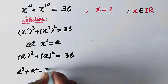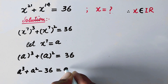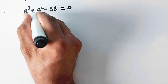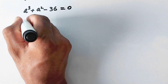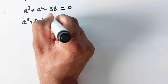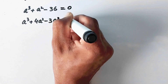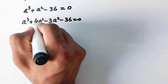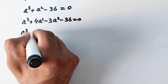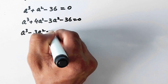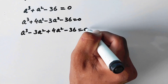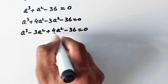This 36 will move to the left side, giving us a cubed plus a squared minus 36 equal to 0. Now we will factorize: we can write a cubed plus 4a squared minus 3a squared minus 36 equal to 0, since 4a squared minus 3a squared equals a squared. We have written it in this order so that our further process will be easy.